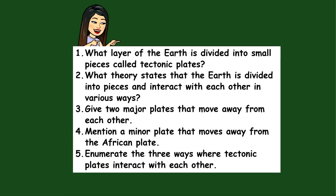Now you will answer five questions. Number one, what layer of the Earth is divided into small pieces called tectonic plates? Number two, what theory states that the Earth is divided into pieces and interact with each other in various ways? Number three, give two major plates that move away from each other. Number four, mention a minor plate that moves away from the African plate. Number five, enumerate the three ways tectonic plates interact with each other.